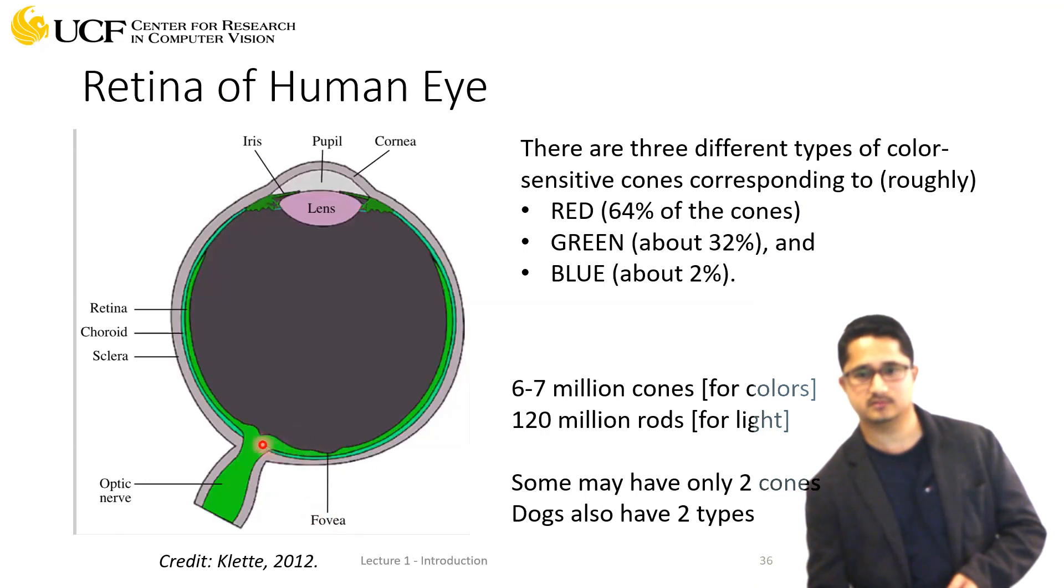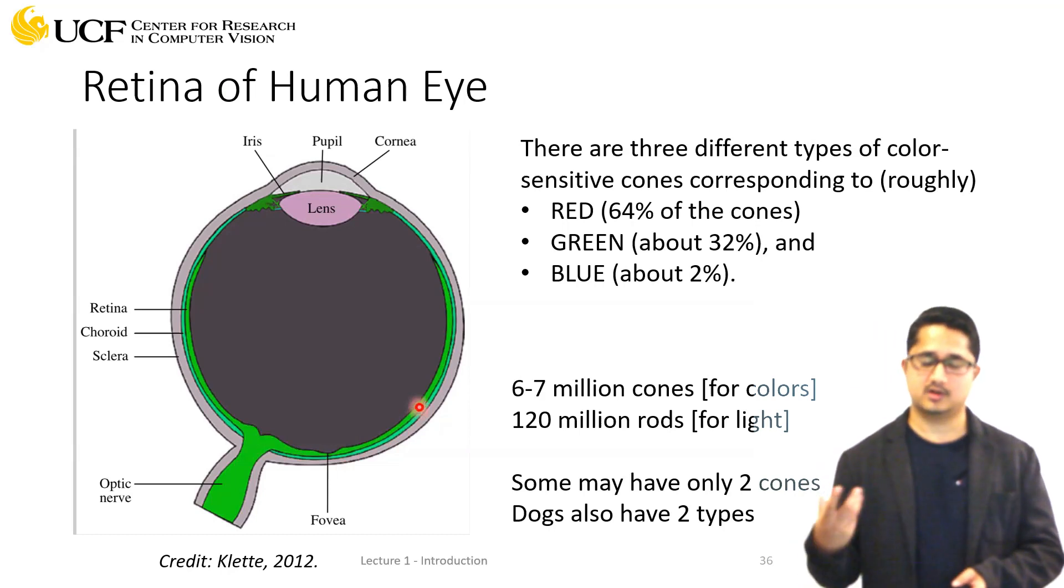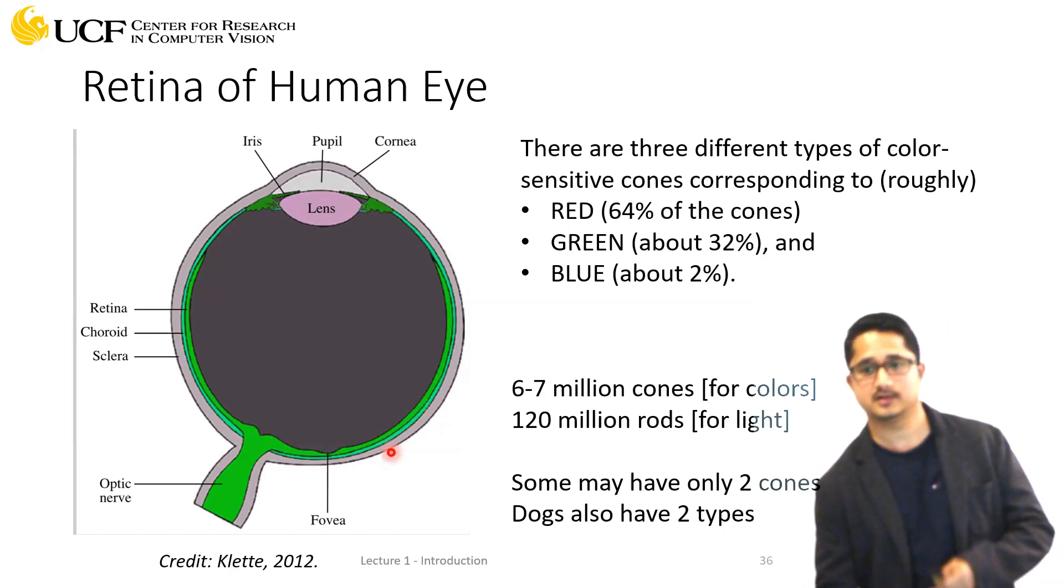These cones are located right over here. When light falls there, depending on the wavelength, the cones respond. For red we have almost 64 percent of the cones, green about 32 percent, and blue only about 2 percent.